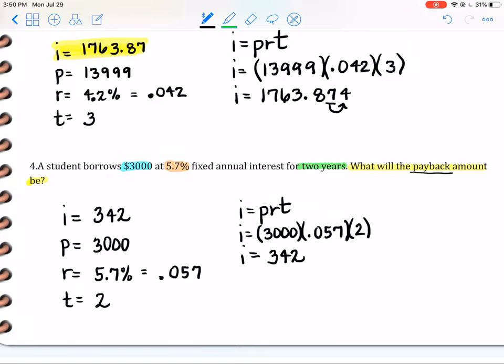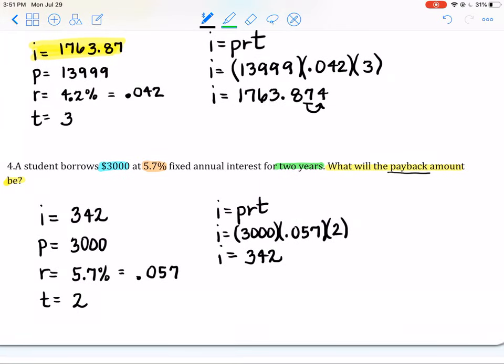So I look back at my question and it doesn't say what will the interest be, it says what will the payback be? So I have to take the interest plus the principal. Please, please, my friends, read these carefully because they will get you on the reading. It's usually not the math that people miss, it's the reading.